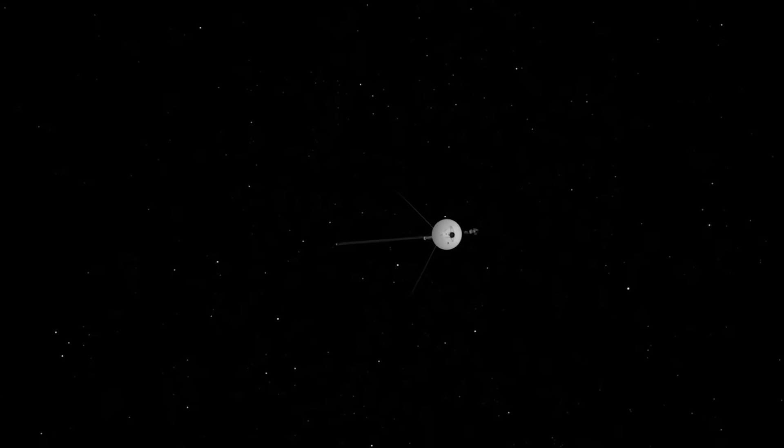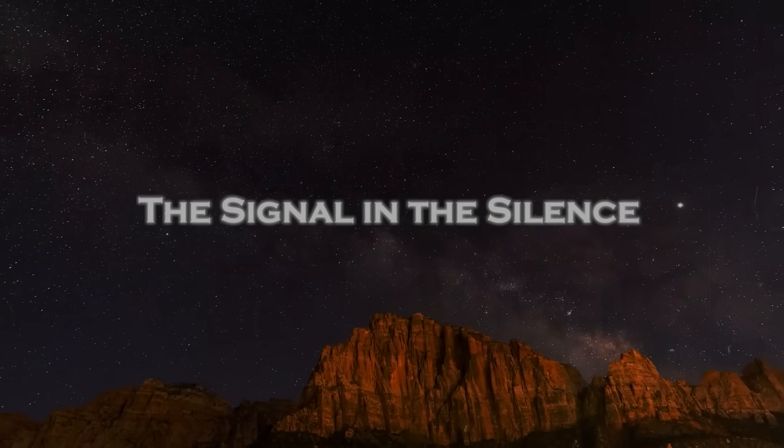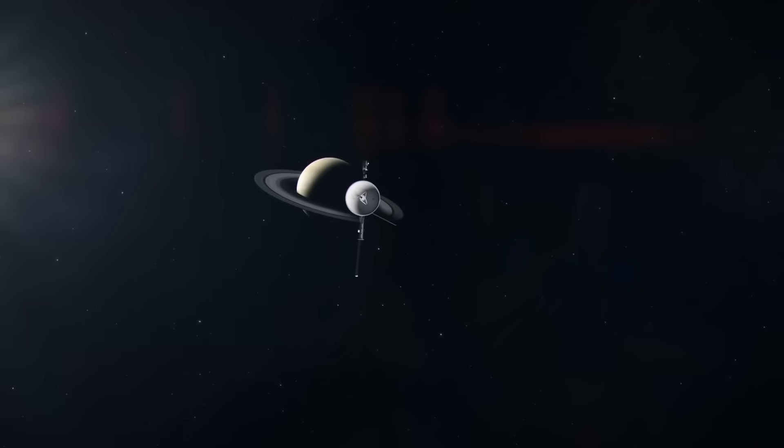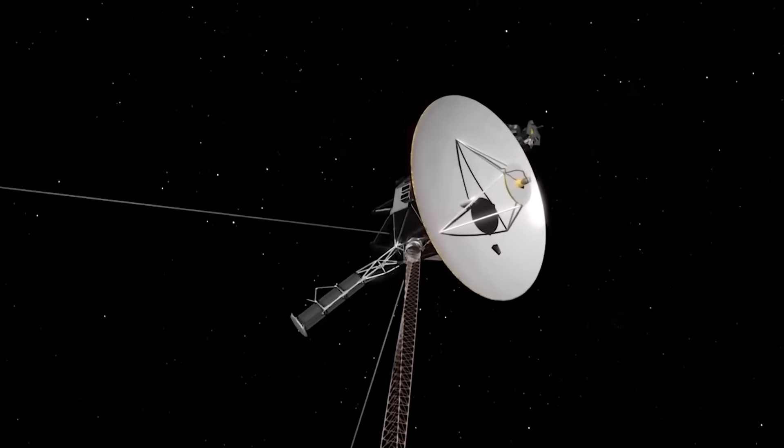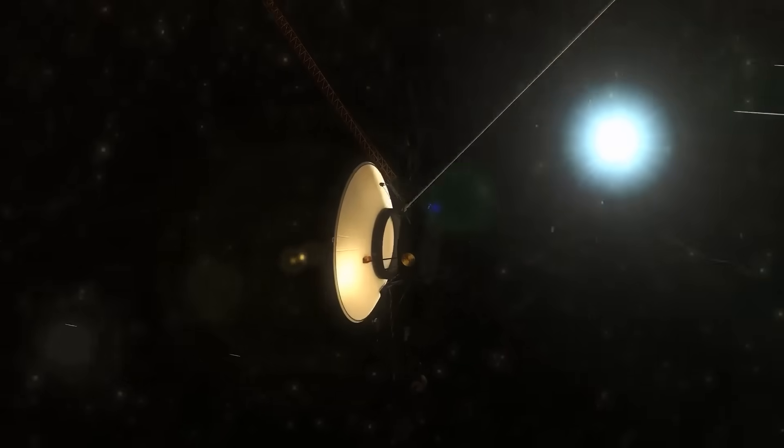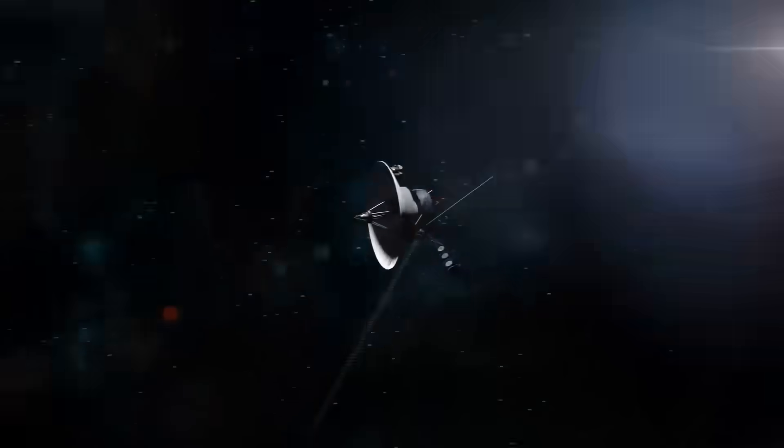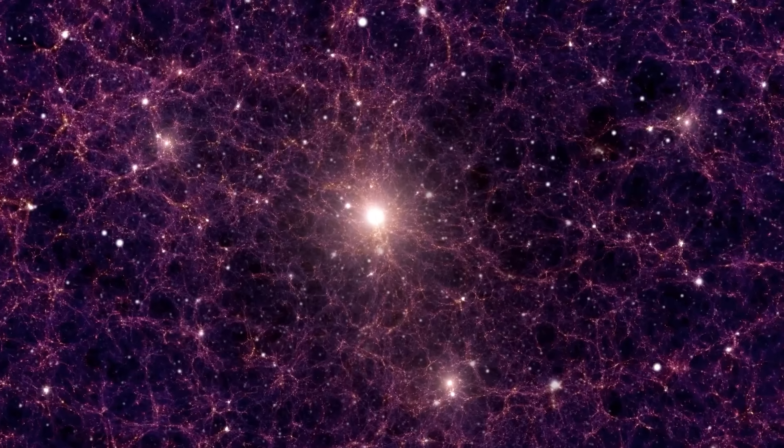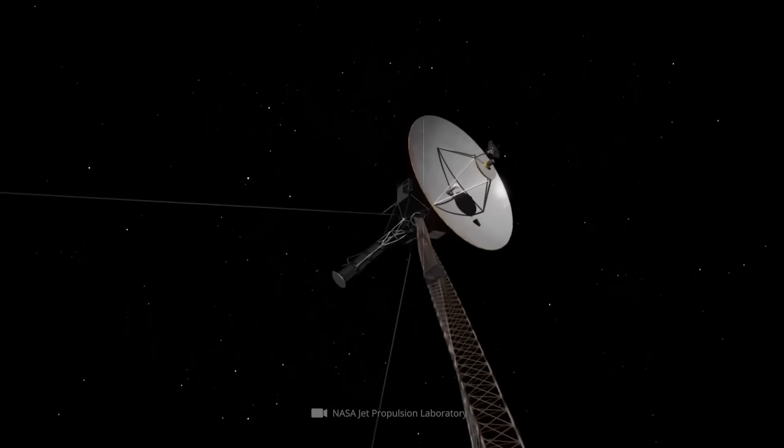Whatever the answer, one thing is clear now. The farther we go, the stranger things become. Voyager 2 was never supposed to find anything like this. It was built for observation, not confrontation. But after 46 years in space, drifting far beyond the warmth of the sun, it may have crossed an invisible line. And what it saw on the other side wasn't chaos or emptiness. It was order, precision, design.